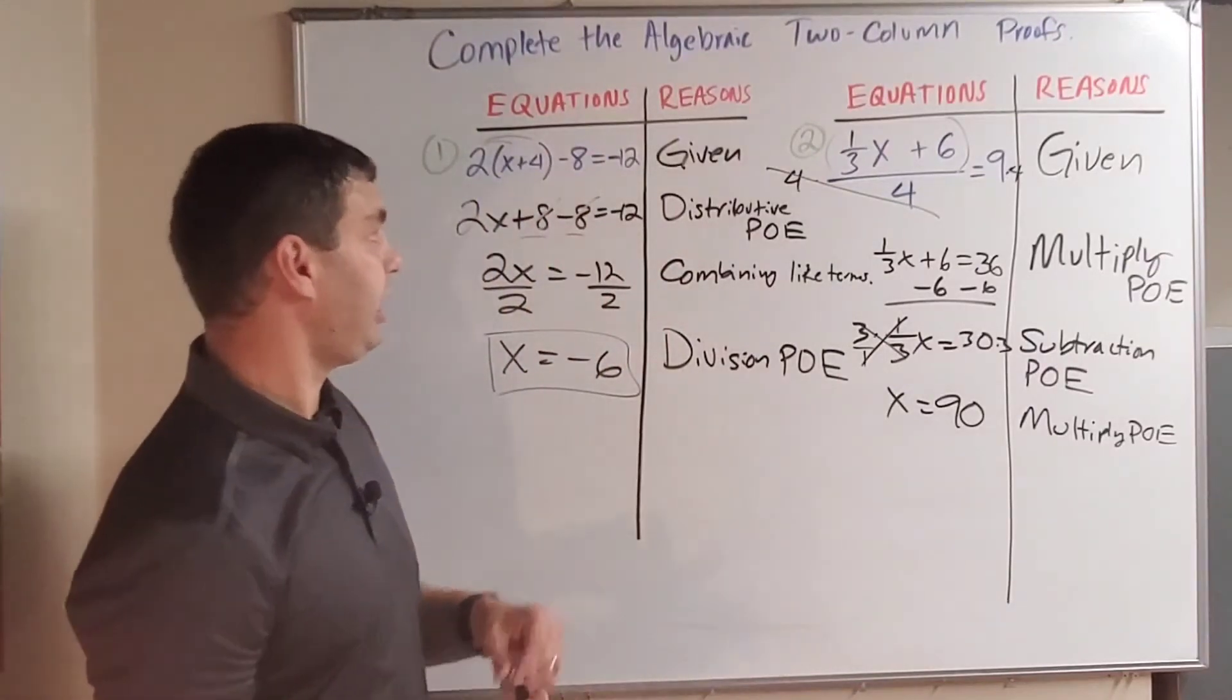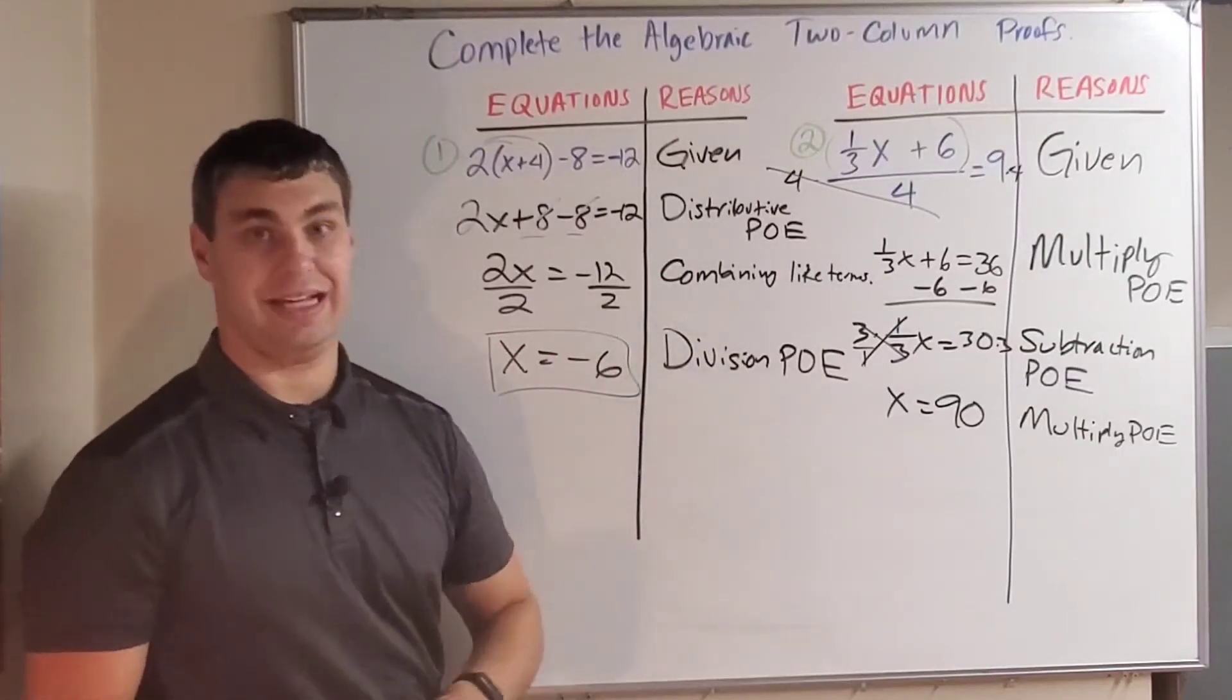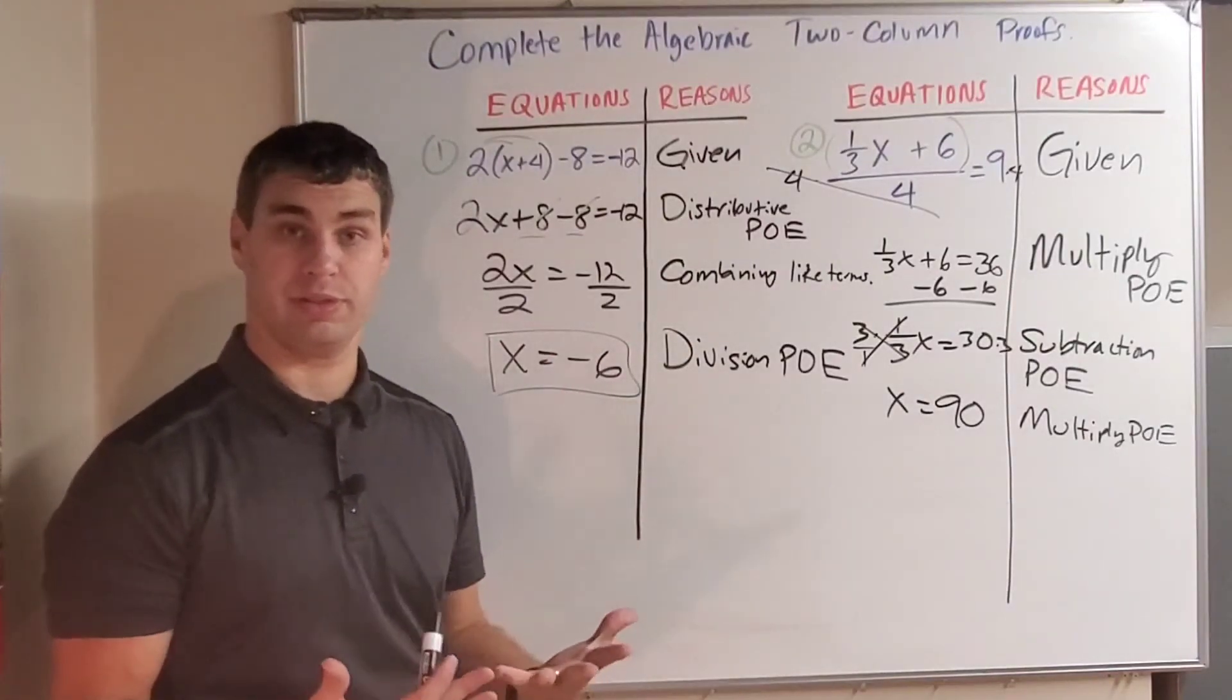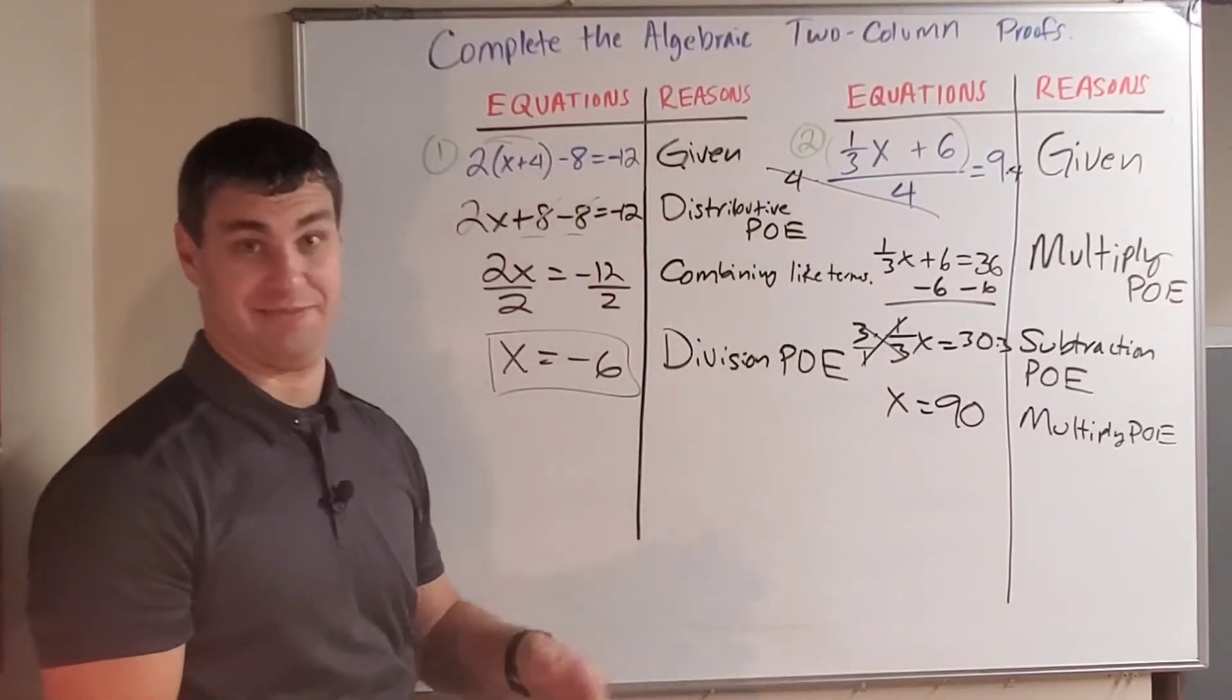So there you have it. We solved our equation. We wrote out our reasons, and that is now called a proof. We proved this is true by saying why we did what we did when we did it.